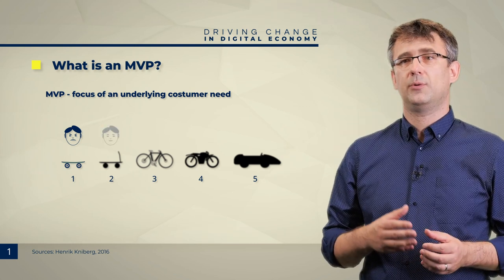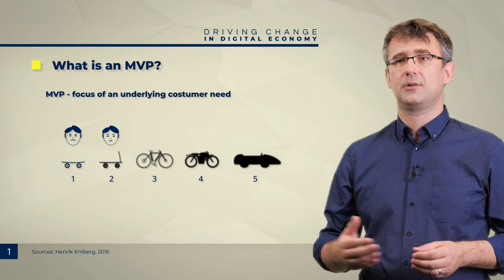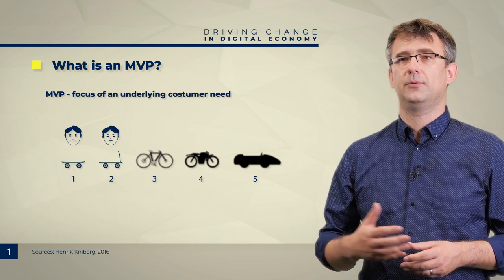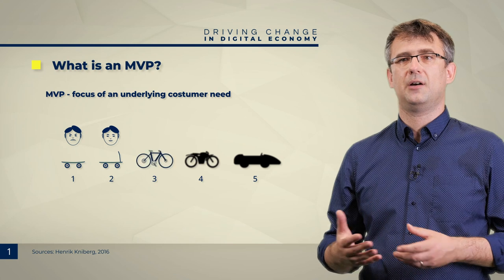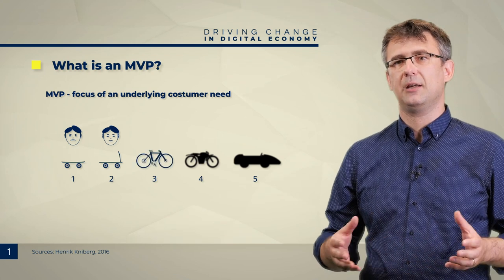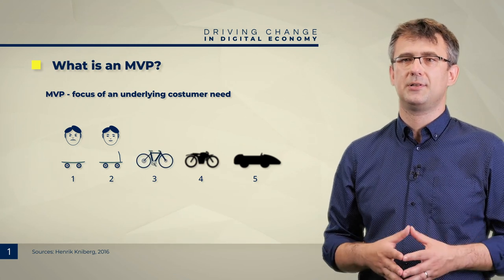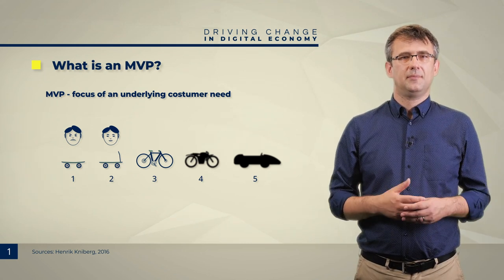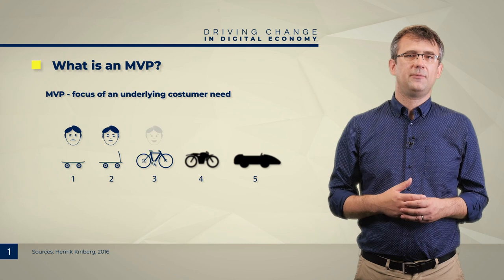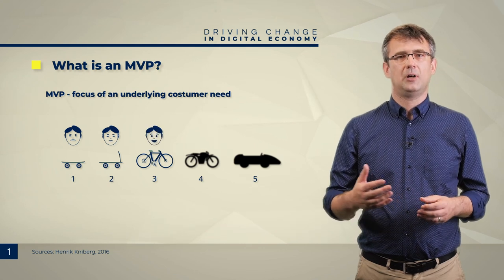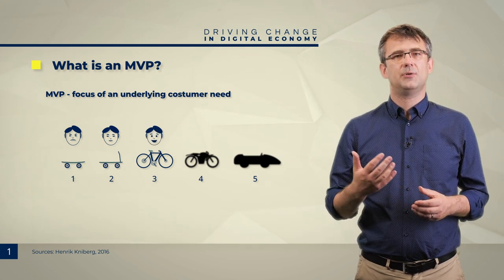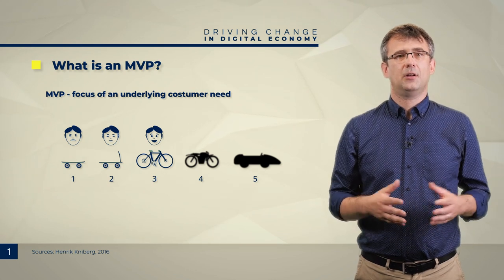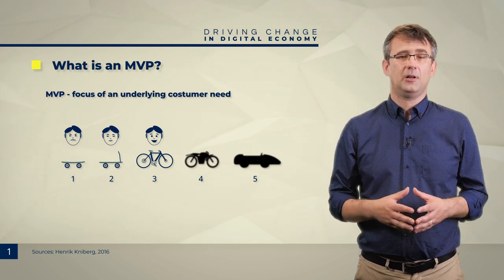As we move from the first skateboard to the second scooter, we solve the stability issue. Then we move towards the push bike to let them travel longer distances using bigger wheels and to let them experience the usage of brakes. Their feedback could be that they like the sense of fresh air flowing down their faces as they move around. If it turns out that the bicycle is all that the customer needs, they have just saved a lot of time, money and effort in developing a car.